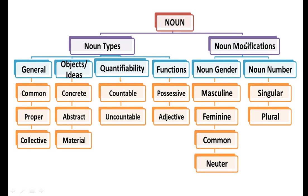Under noun modifications, we have two types, that is noun gender and noun number. Under noun gender: masculine, feminine, common and neuter. And under noun number, we have singular and plural. However, in this video, we are going to cover only the noun types.